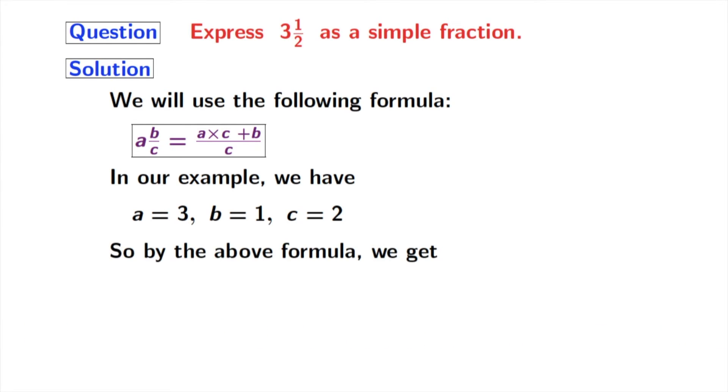So by the above formula, we get 3 and 1 by 2 is equal to 3 times 2 plus 1 by 2, which is equal to 6 plus 1 by 2, and that gives us 7 by 2.